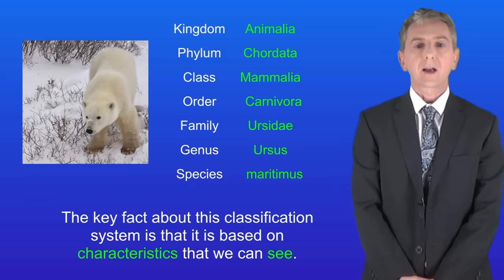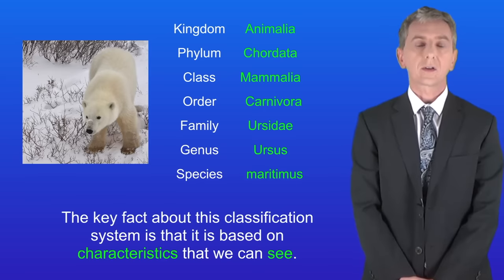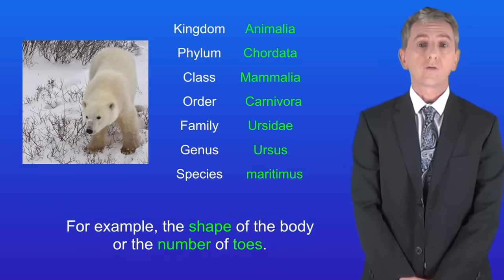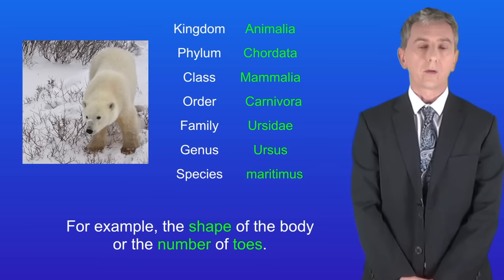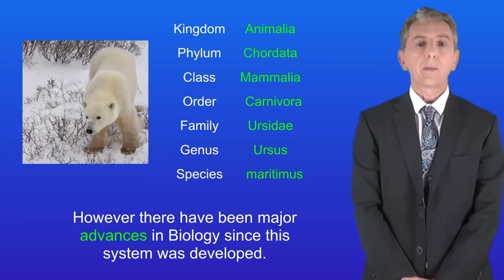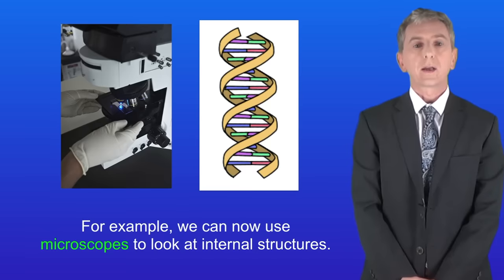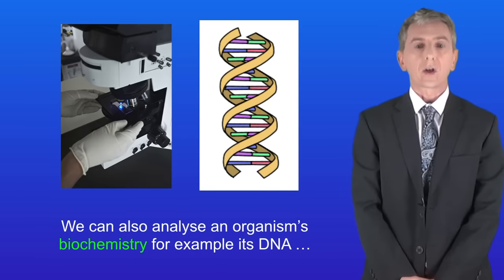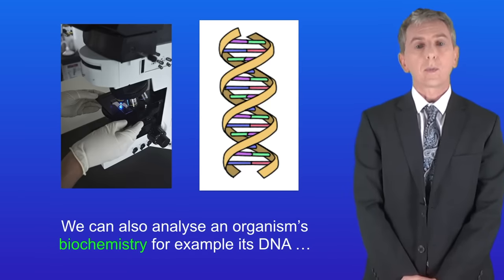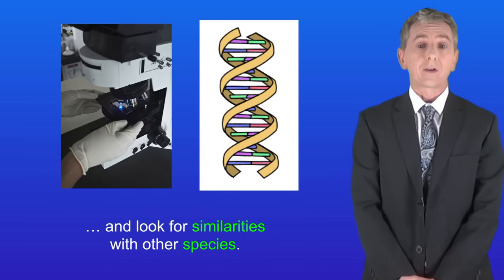Now the key fact about this classification system is that it's based on characteristics that we can see. For example the shape of the body or the number of toes. However there have been major advances in biology since this system was developed. For example we can now use microscopes to look at internal structures. We can also analyze an organism's biochemistry. For example its DNA and look for similarities with other species.